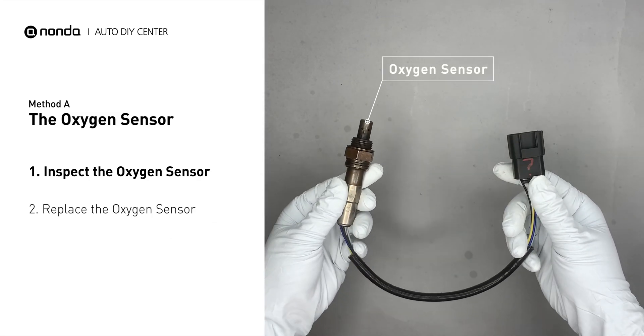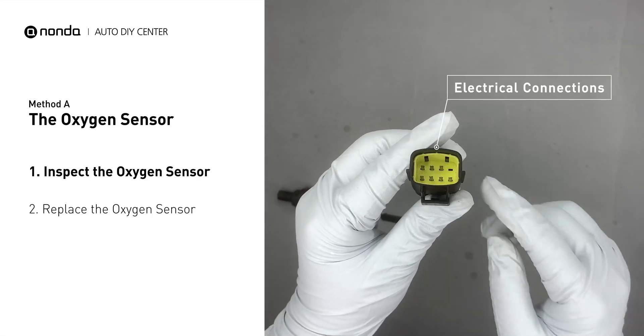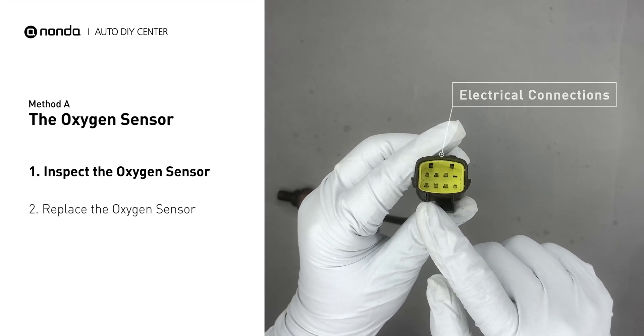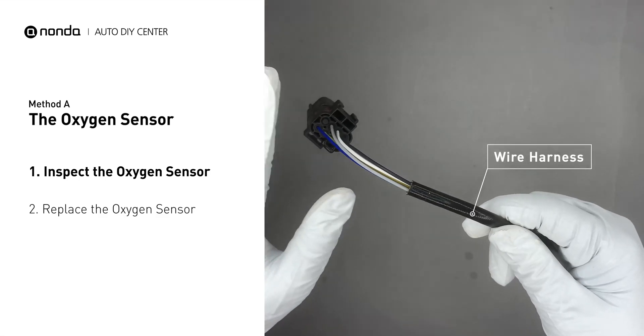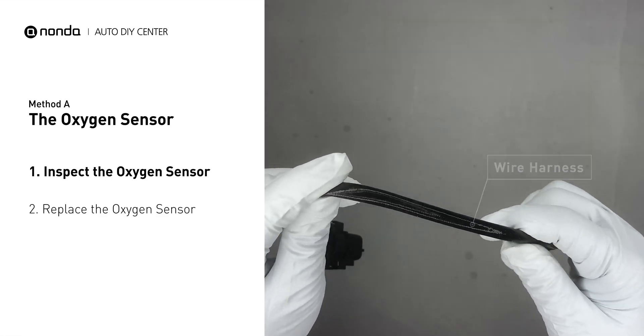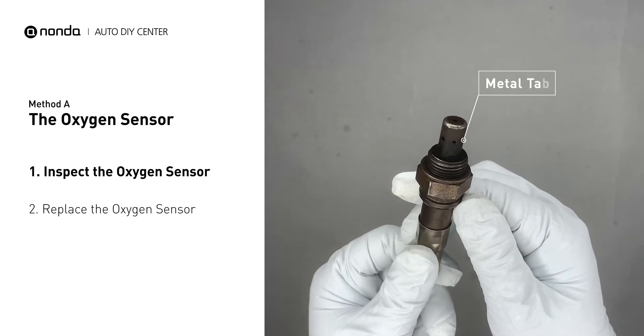Visually check the oxygen sensor's electrical connections, wire harness, and metal tabs for any damages.